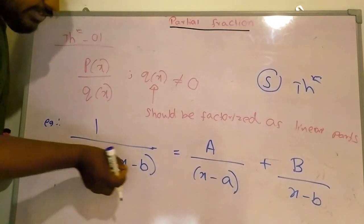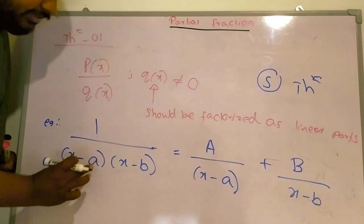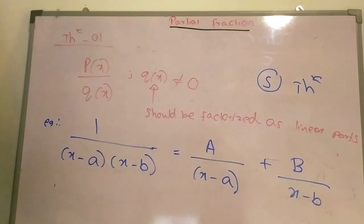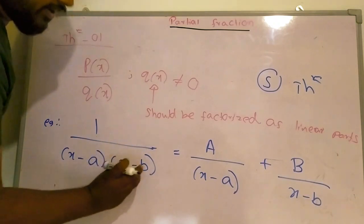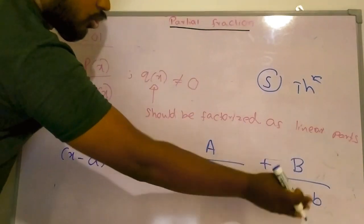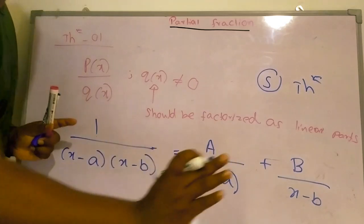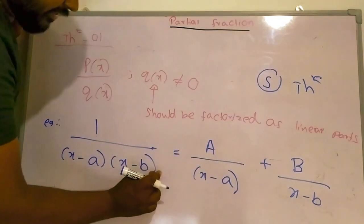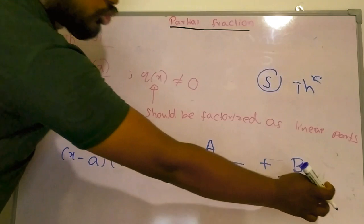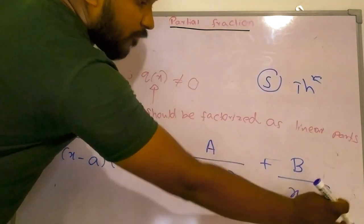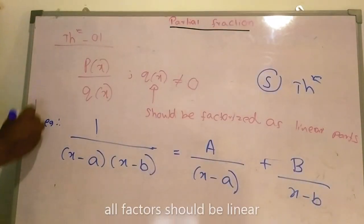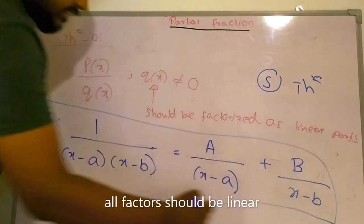All the time we have the denominator with linear parts like (x minus a), (x minus b), or (x minus c), and we are dividing it into A over (x minus a) plus B over (x minus b) as individual parts. If there are 3 terms — (x minus a)(x minus b)(x minus c) — you should add plus C over (x minus c). This is the first theorem.